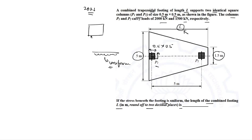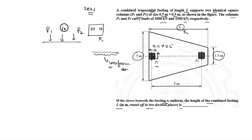If it is a rectangular combined footing and the load is too high or space is limited, we may not get uniform pressure, so we use a trapezoidal footing instead. Uniformity is achieved by ensuring the resultant of loads P1 and P2 coincides with the centroid of the trapezoid — they must be at the same location.